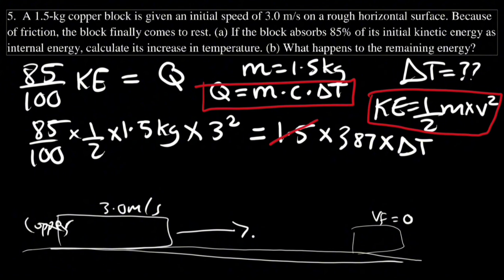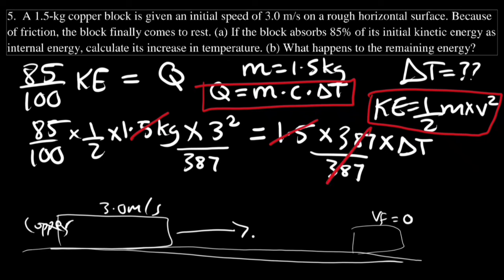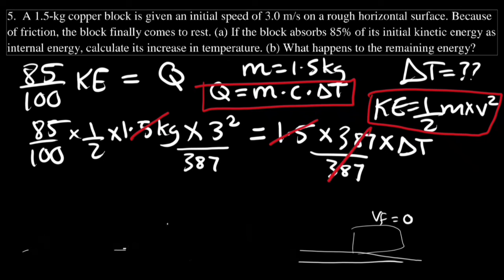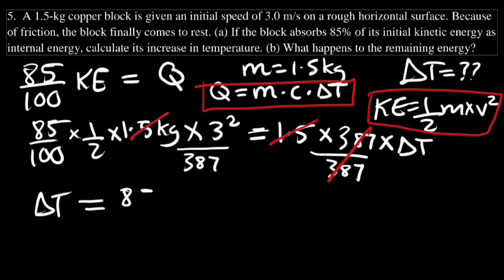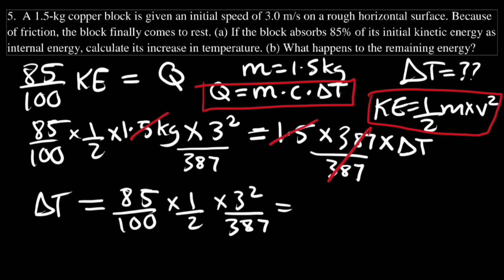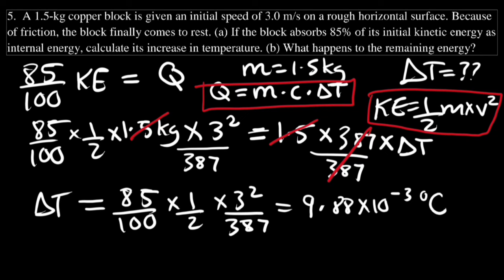The mass cancels from both sides. Dividing by 387 gives ΔT = (0.85 × 0.5 × 9) ÷ 387. Calculating this gives ΔT ≈ 9.88 × 10⁻³ degrees Celsius.